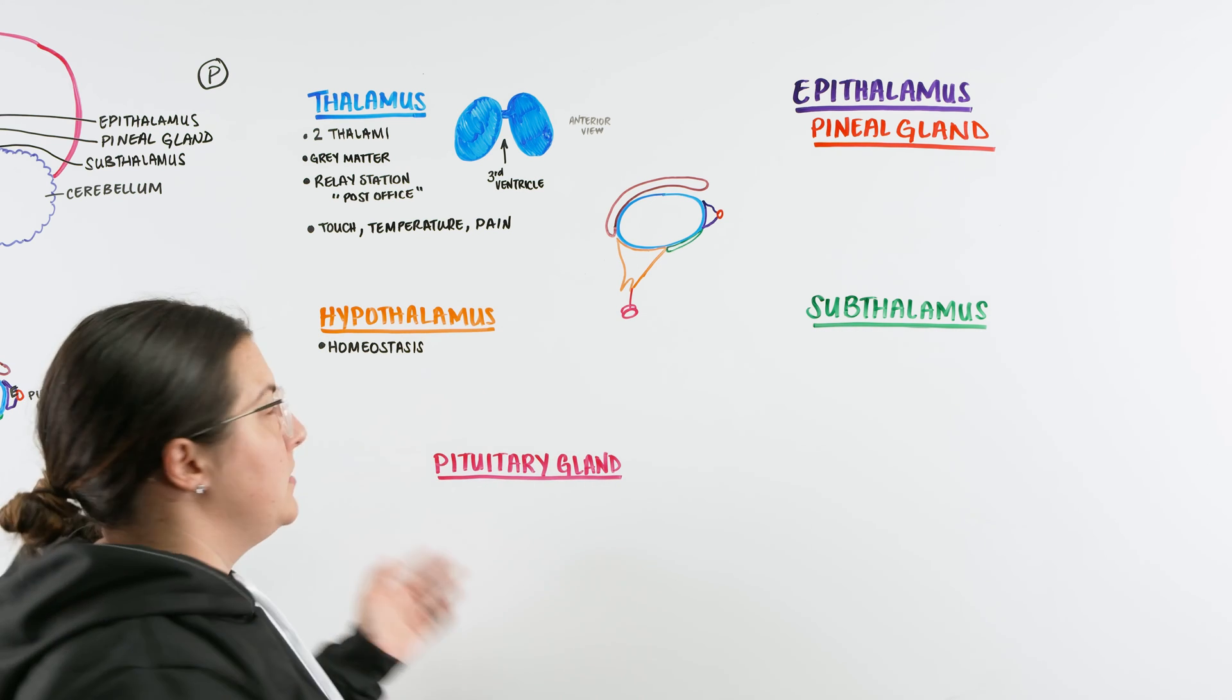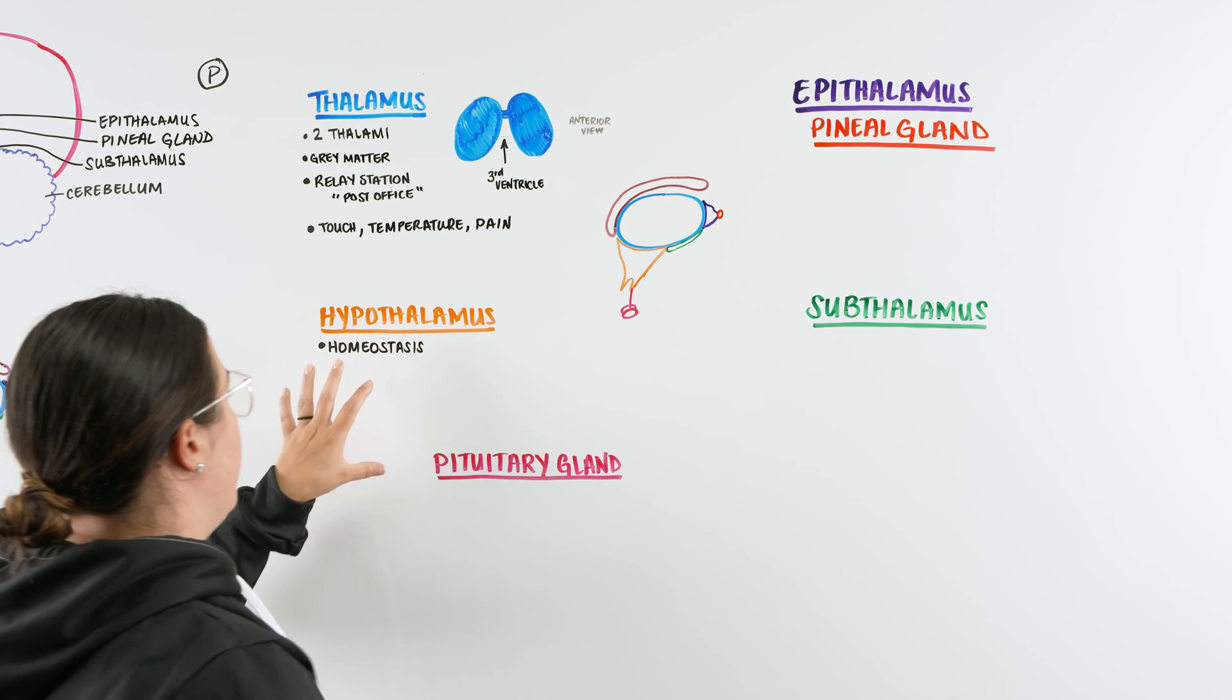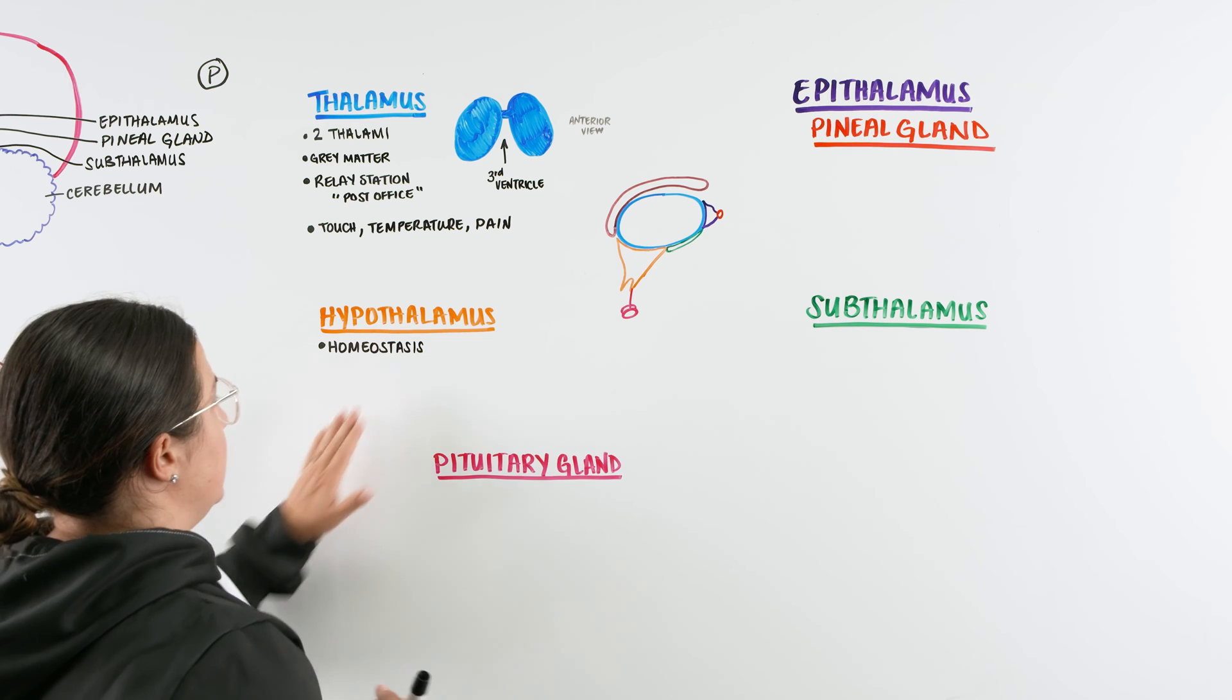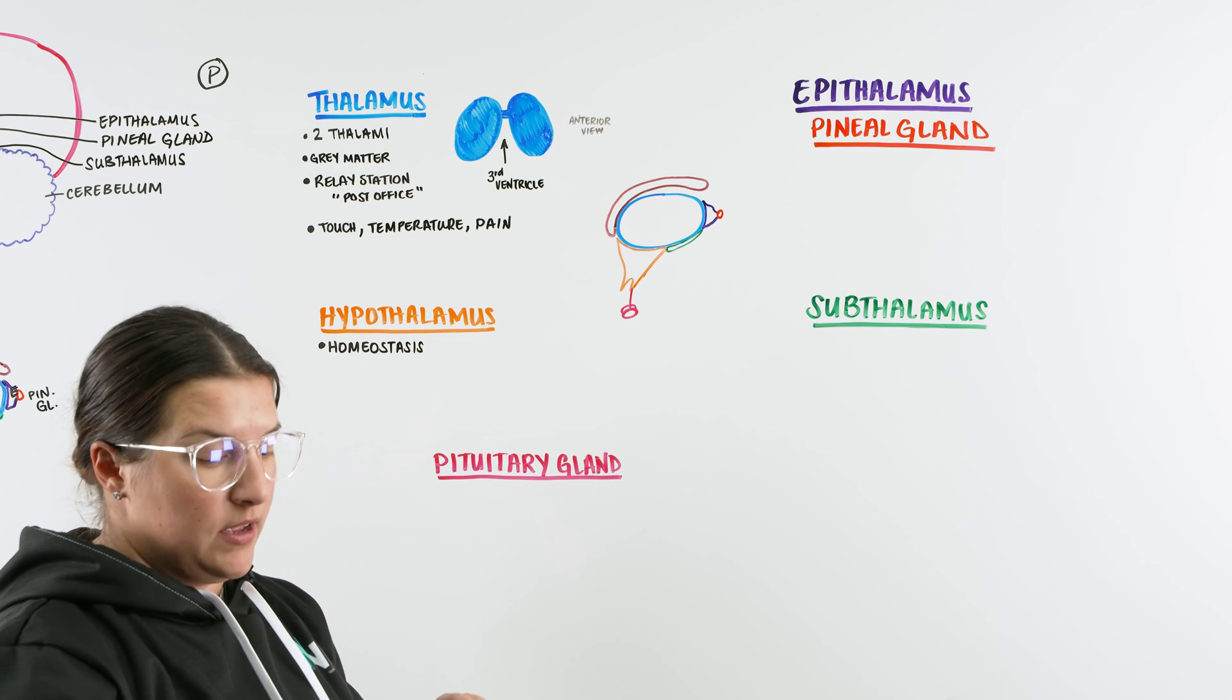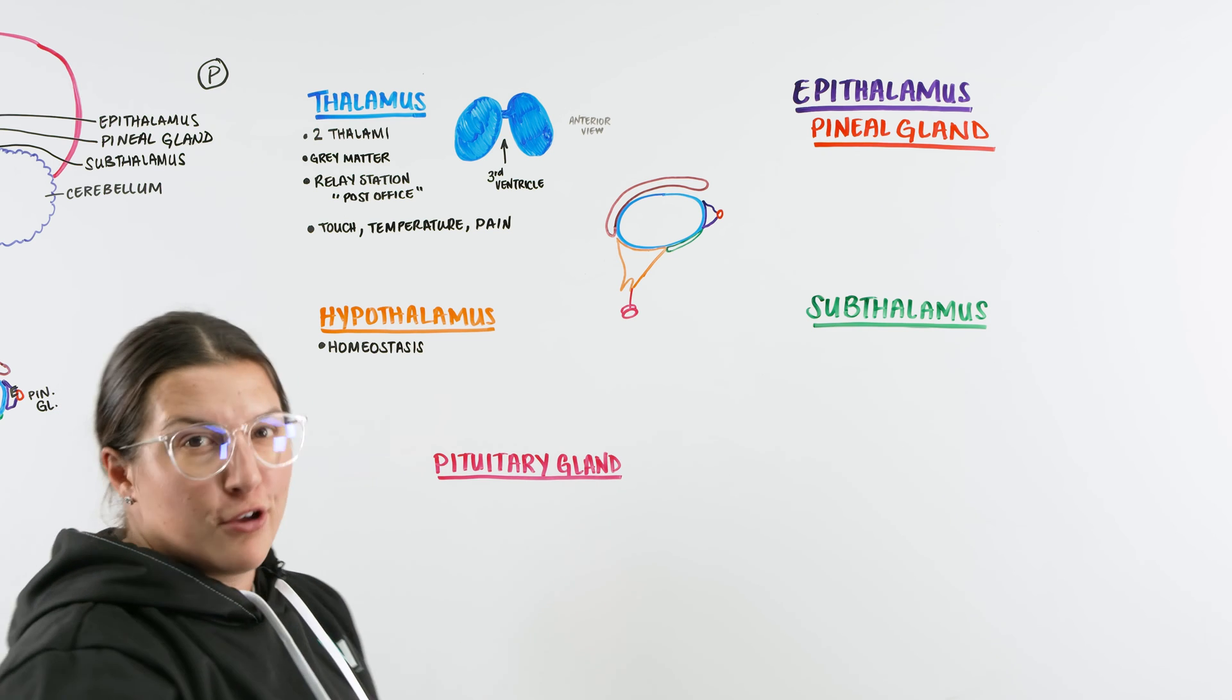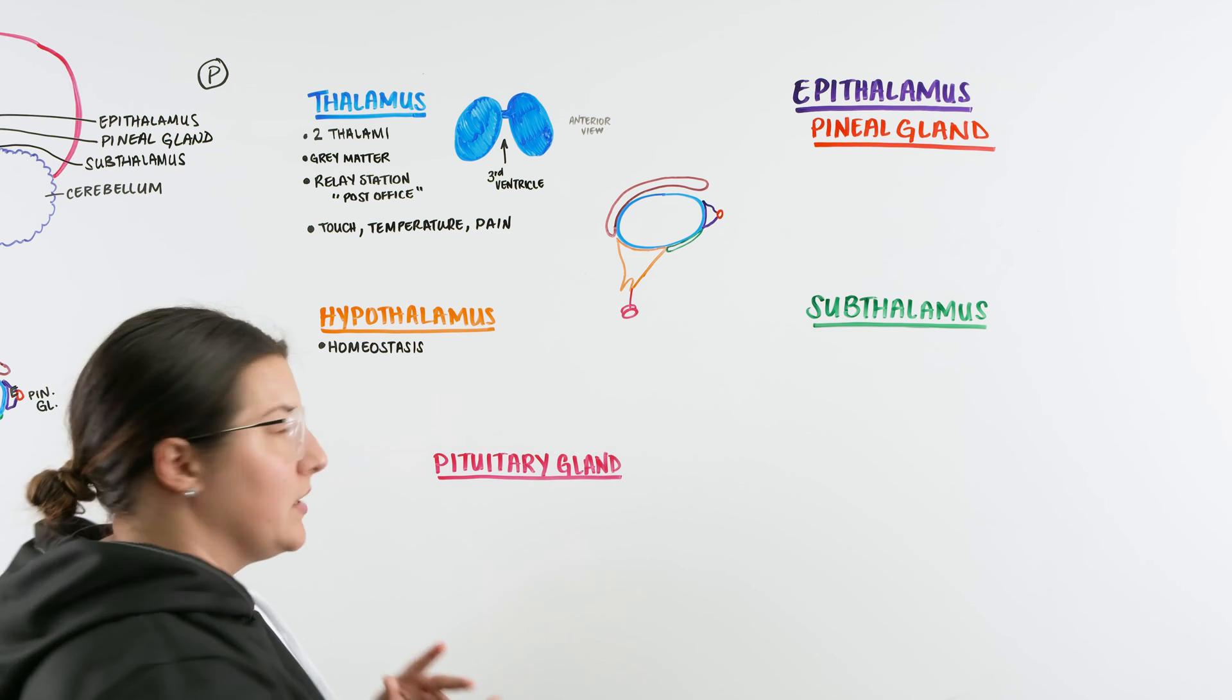So when we're talking about homeostasis with the hypothalamus, we're talking about different functions that are going to help keep balance within our body. Some of those things that can be balanced by our body by the hypothalamus is our body's temperature, our thirst, our hunger, and also a little bit of our sleep-wake cycles.